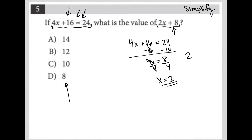So, because I know that x is 2, instead of 2x plus 8, I could say 2 times 2, replacing x with 2, plus 8. 2 times 2 is 4, 4 plus 8 is 12. Therefore, our correct answer is choice B.